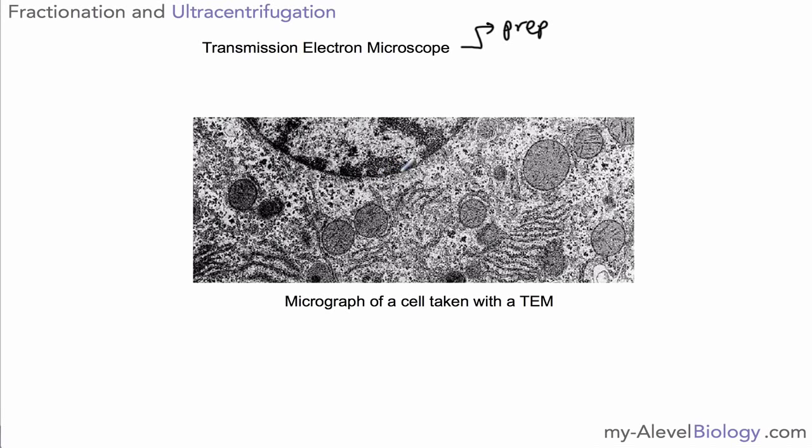We don't actually get to see what the organelles are actually doing but we do get a very good idea of what they look like. Now another method of studying these types of organelle is by using something called fractionation and ultracentrifugation. Fractionation basically means to break up, ultracentrifugation is all about spinning our sample of organelles in order to separate them out into different parts that we can study.